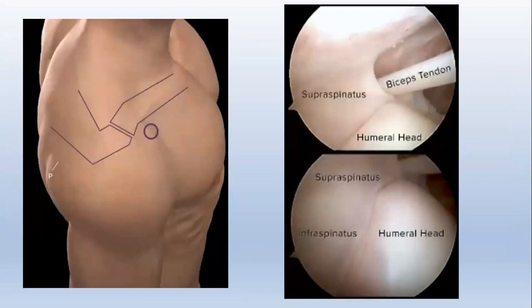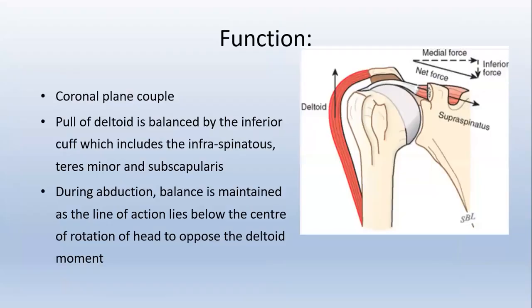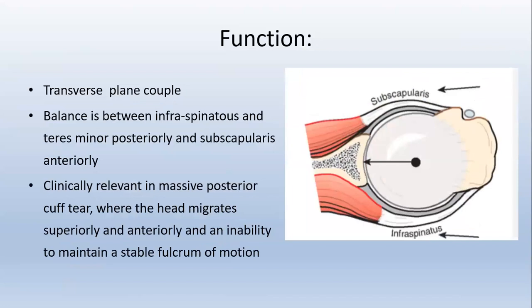Through the posterior view, you can see the supraspinatus and infraspinatus muscle. Through the lateral view, you can see the scapular spine, anteriorly supraspinatus and posteriorly infraspinatus. The rotator cuff has two functions: coronal plane couple and transverse plane couple. In the coronal plane, the pull of the deltoid is balanced by the inferior cuff — infraspinatus, teres minor, and subscapularis. During abduction, balance is maintained as the line of action lies below the center of rotation to oppose deltoid movement. In the transverse plane couple, the balance is between infraspinatus and teres minor posteriorly and subscapularis anteriorly.